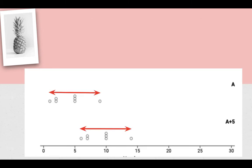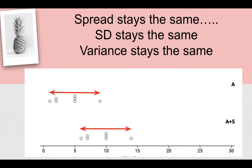What about the spread? Notice the spread on both those is exactly the same. So the mean's increased by 5, but the spread has stayed the same, which means the standard deviation stays the same, which means the variance also stays the same. So adding 5 to each value makes no difference to the spread, makes no difference to the standard deviation because that's measuring the spread, and obviously therefore makes no difference to the variance.